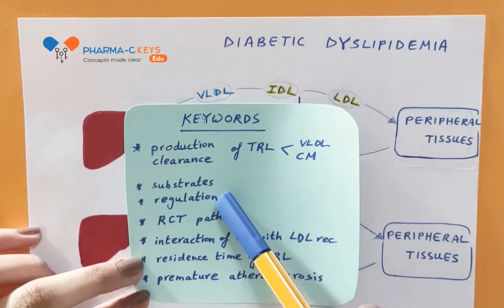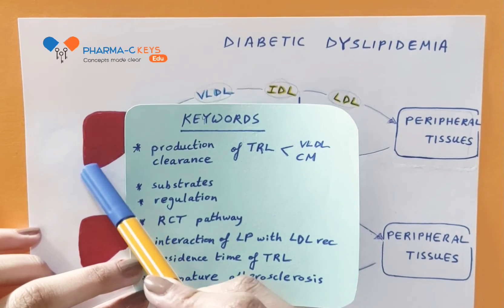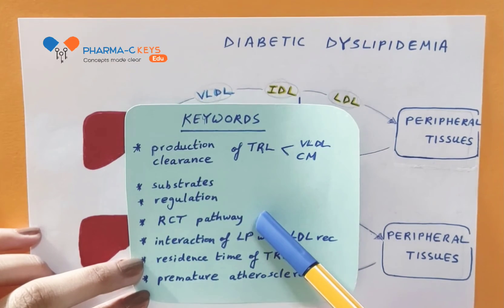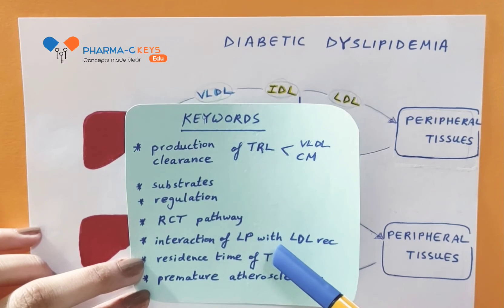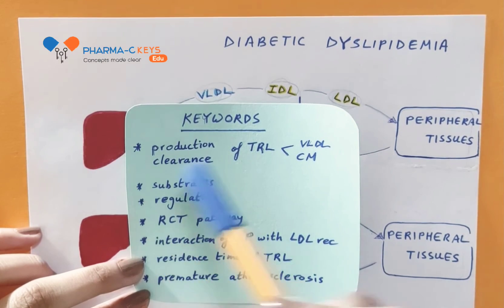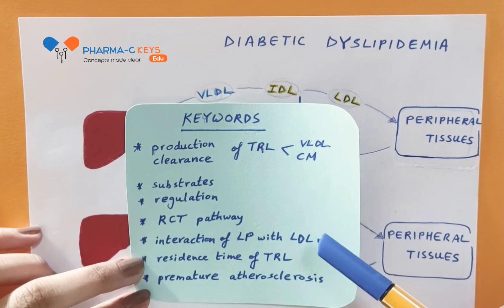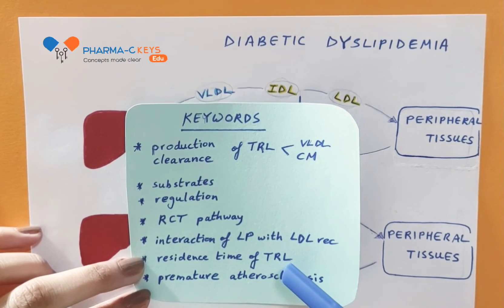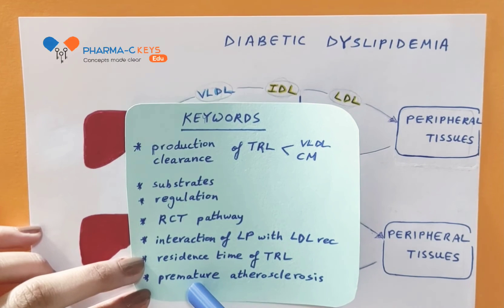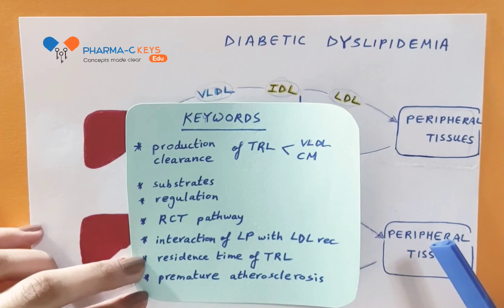The role of insulin in regulation of LDL receptors. The reverse cholesterol transport pathway. Interaction of lipoproteins with the LDL receptors. Residence time of triglyceride-rich lipoproteins. And how this results in premature atherosclerosis.